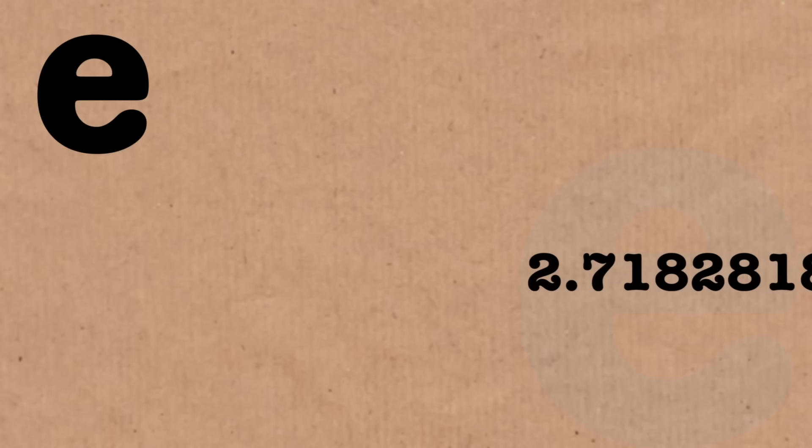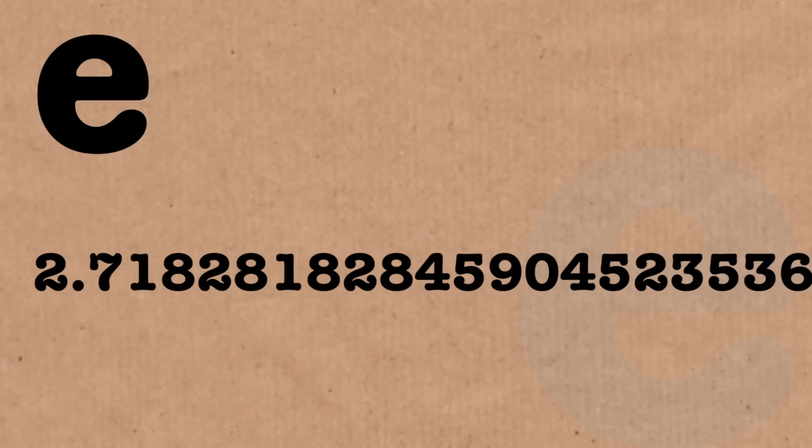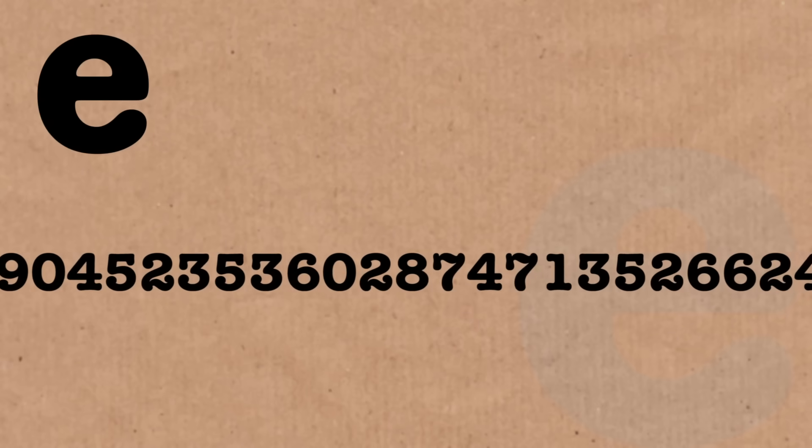So what we want to do today is to demonstrate that this number, which goes on and on and on forever and ever, cannot be represented as a ratio of two integers. That's what an irrational number is. A rational number can always be represented as the ratio of two integers — a fraction. Here, we're going to demonstrate that e cannot be done that.